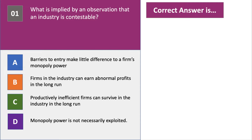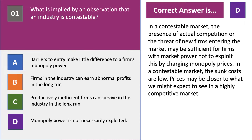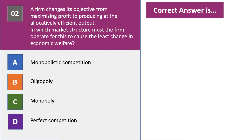The answer to question one is D. The key thing about a contestable market is that the presence of actual competition — firms already in the market — or indeed the threat of new firms coming in may be sufficient for firms with market power to not exploit this by charging high monopoly prices. In a contestable market with low sunk costs, prices are often quite close to a highly competitive market, because it's the threat of competition as well as actual competition which keeps firms from fully exploiting their market power.